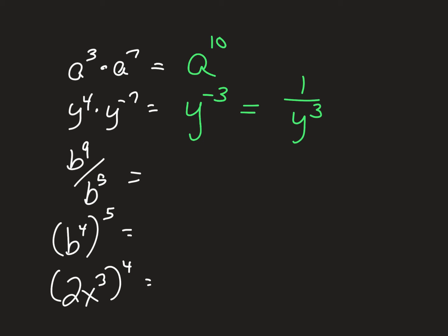The third one here, division. You subtract the exponents. I would just do nine minus five, gives four, b to the fourth power. Exponent inside, exponent outside. When you raise a power to a power, you multiply the exponents. That becomes b to the twentieth.